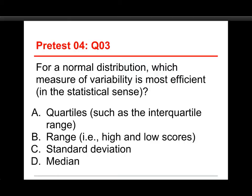Number three: for a normal distribution, which measure of variability is most efficient — in the statistical sense? The choices are the quartiles, the range, the standard deviation, or the median. The answer is the standard deviation. Efficiency means being able to achieve a certain level of precision with a smaller number of people — being more accurate with fewer people. The standard deviation is best at that as long as you have a well-behaved normal distribution. If it's really skewed or you've got a lot of outliers, it's no longer the case.